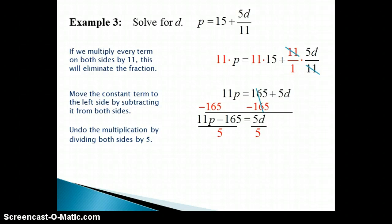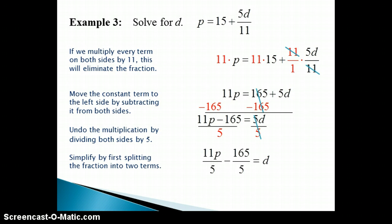Because of this fact, I should split this fraction up into two terms, or in other words, divide each term separately by 5, so that my answer will be more simplified. 165 divided by 5 is 33. So our solution is D is equal to 11P over 5 minus 33.